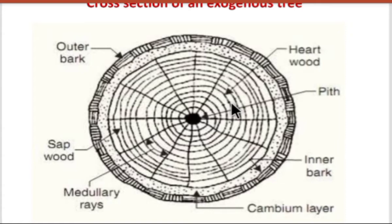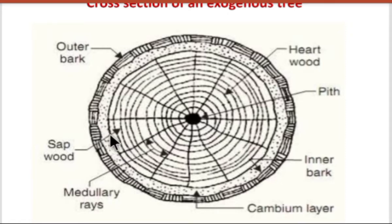Next comes sap wood. The portion between the heart wood and the cambium layer is called sap wood. It does not provide any strength to the tree, but it supplies water and minerals to the tree, which helps in growing the tree. It is a very active part in growing the tree.